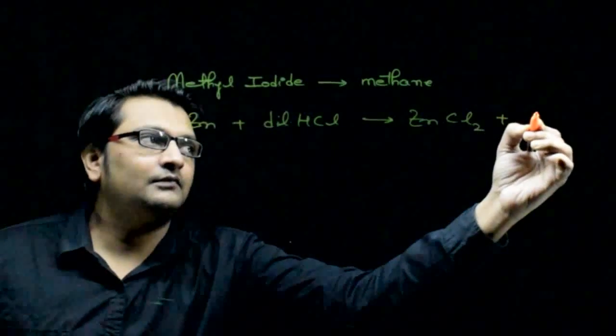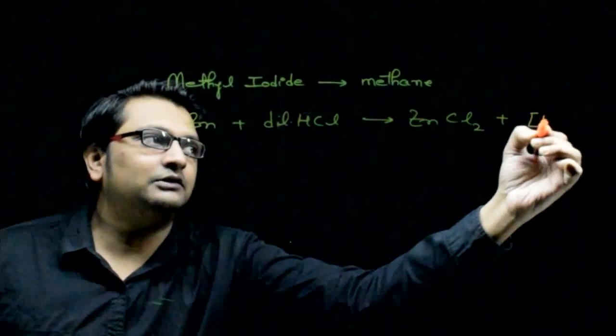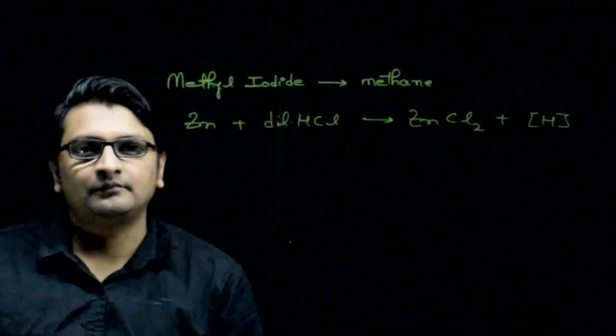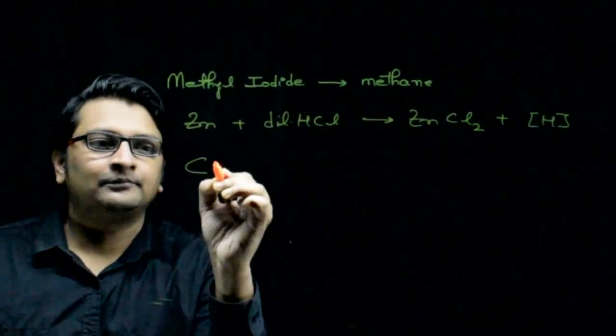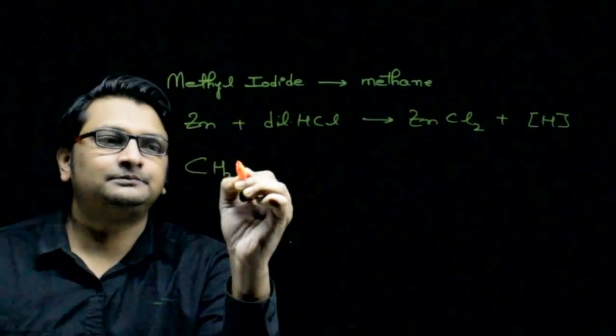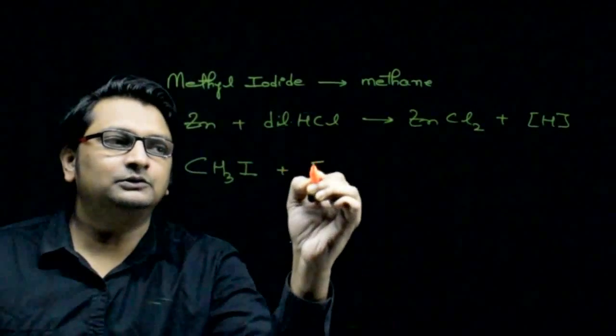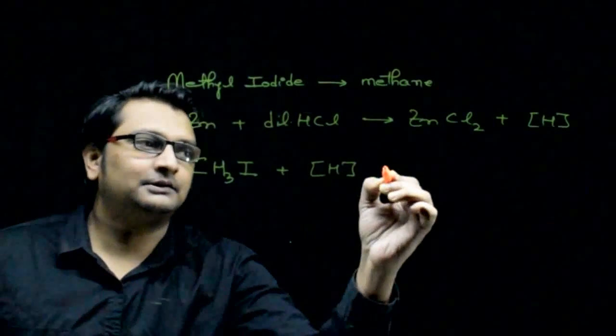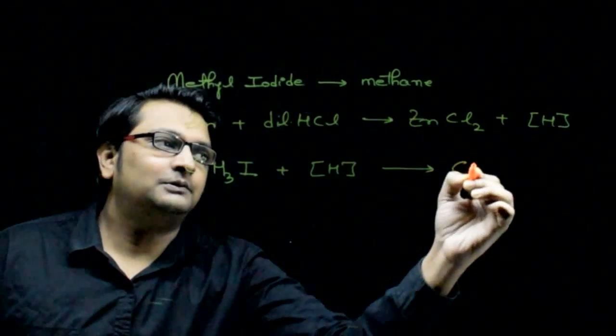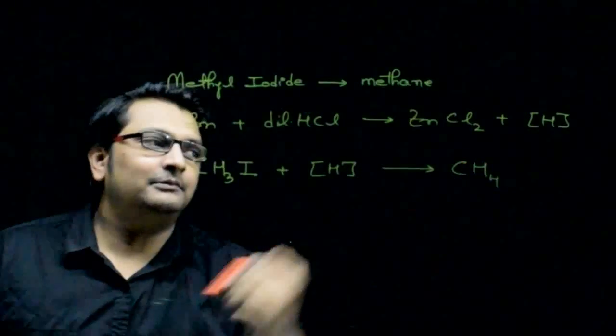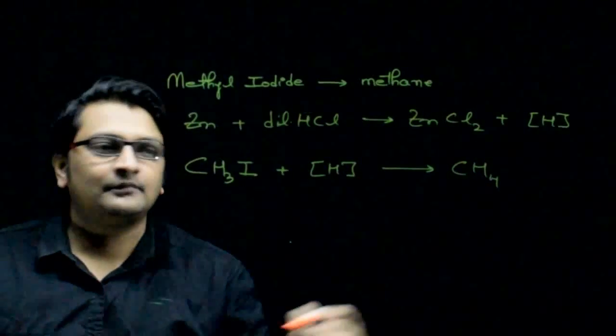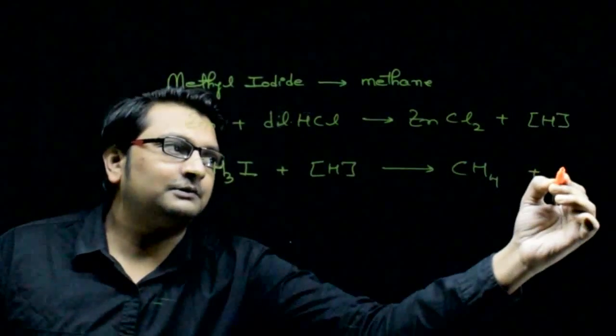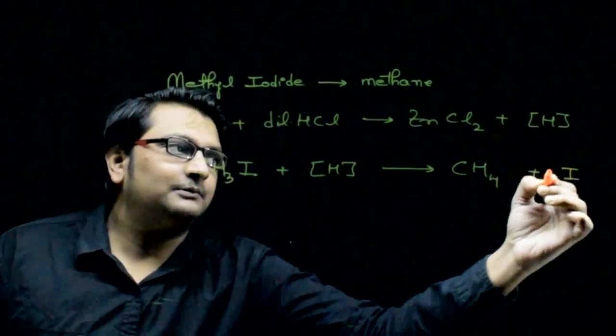This nascent hydrogen atom can be used to reduce methyl iodide to methane gas and itself becomes hydrogen iodide.